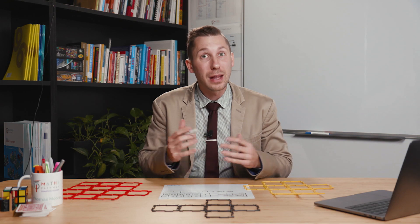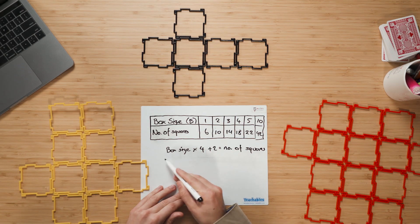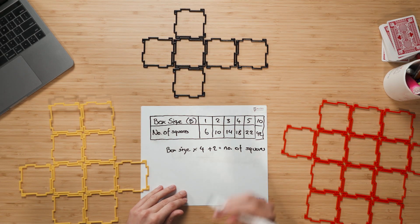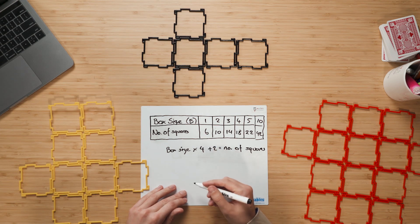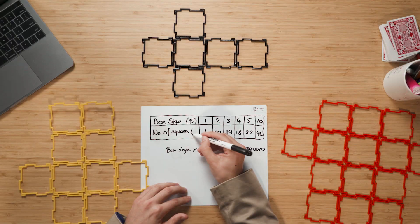I'll show you what I mean. Instead of writing box size, I tell them we can use a letter because a letter is a lot easier to write out all of this and all of this. So I might use the letter B, as you can see I've just done. And instead of writing number of squares, I might use another letter, for example, N.